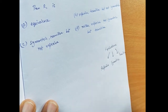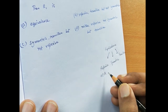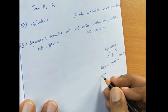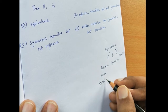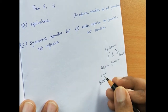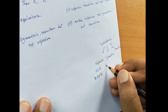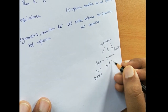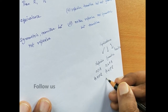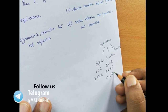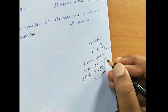A reflexive relation means if an element belongs to set A, then (A, A) should belong to the relation — that is, the element should be related to itself. Symmetric means if two elements A, B belong to set A and (A, B) belongs to relation R, then (B, A) should also belong to the relation.